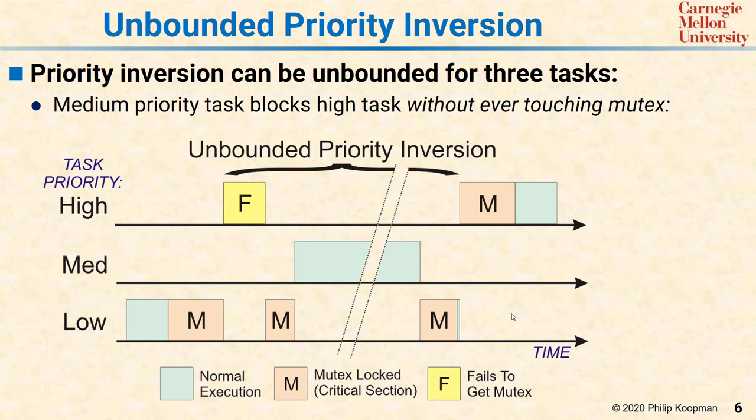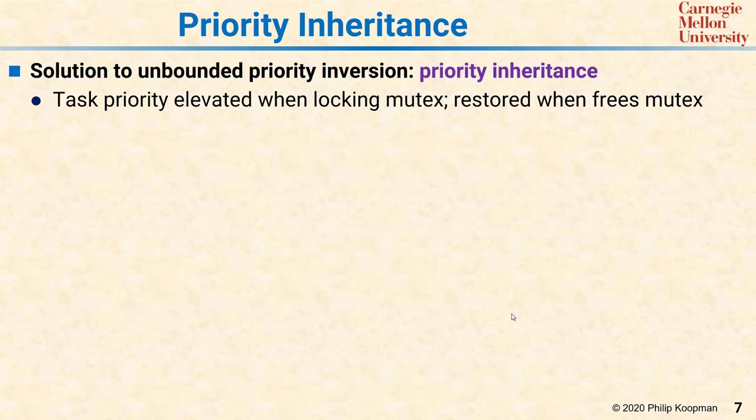A medium priority task has stalled the high priority task indirectly, and trying to account for all possible medium priority tasks basically gives you an unbounded priority inversion that's just way too long. To handle this case, you need some sort of plan to avoid that medium priority task delaying the low priority task.